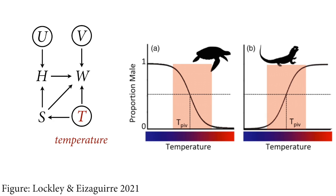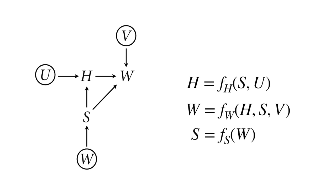We'll talk more about confounds in future lectures, but the warning is: when you decide to ignore something, you're making strong assumptions about how many arrows it's inserting into your graph and where. In humans, temperature does not influence birth sex as far as we know, so we can ignore it. There are almost certainly common causes of height and weight — like nutrition — that we're not modeling, but we'll perhaps address those in a future lecture.